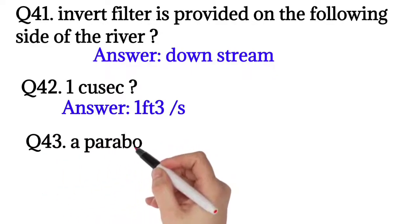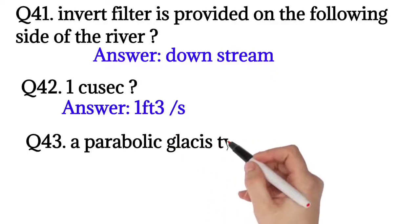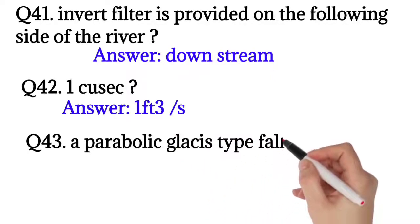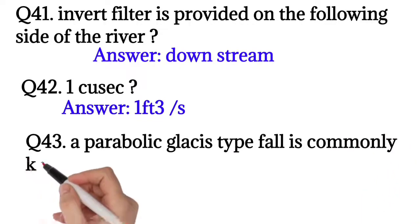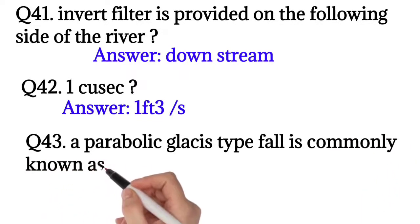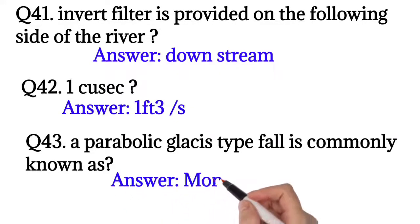Question number 43: A parallel of the classes type fall is commonly known as? The answer is Montague Falls.